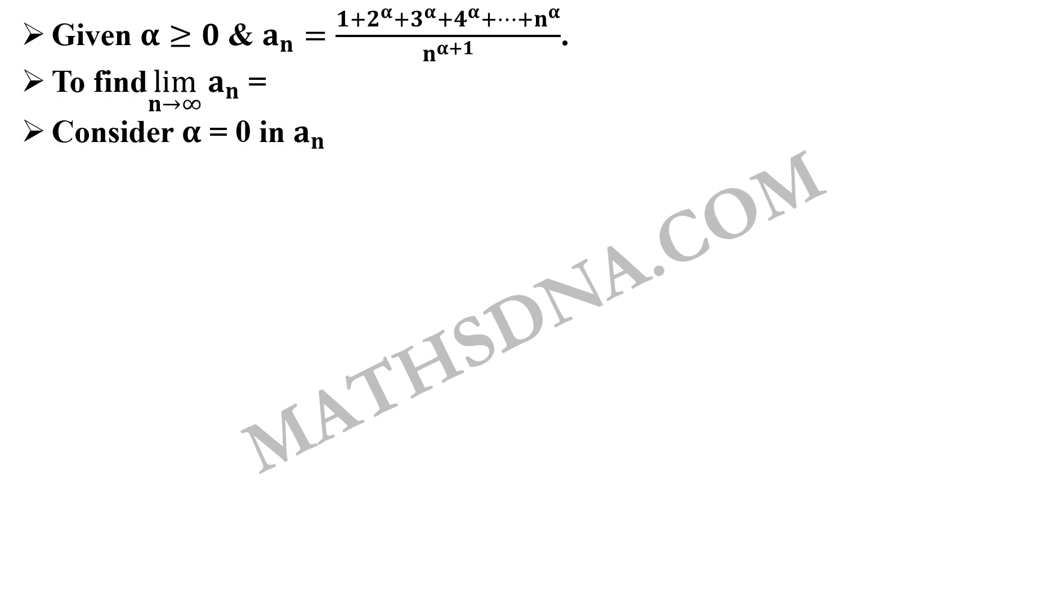As per the given question, we are given that alpha is greater than or equals to 0 and a_n is defined as 1 plus 2 raised to alpha plus 3 raised to alpha up to n raised to alpha upon n raised to alpha plus 1. Now whenever such type of questions are given and you are allowed to select the value of any variable in the question, always select the values of the variable and then try to solve the question.